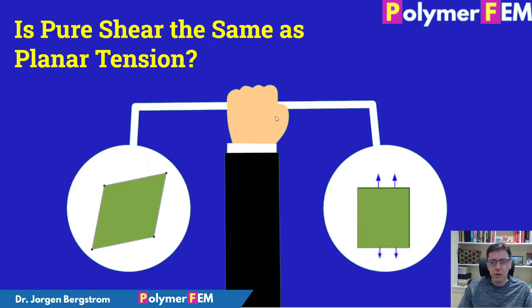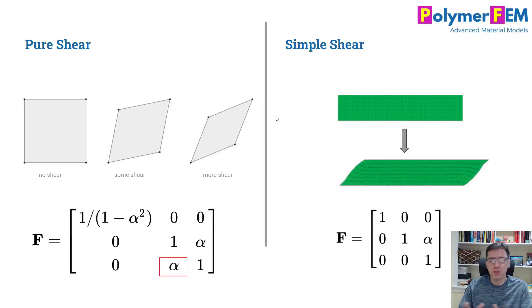Let's start by talking about pure shear versus simple shear. Simple shear is an easy experiment to perform. You have a specimen and you basically just shear it along the top here. You get the shear deformation in the specimen. The deformation gradient under these conditions is written at the bottom right here. Alpha is on the off-axis position.